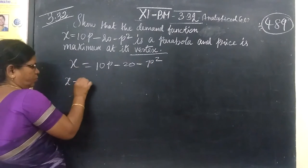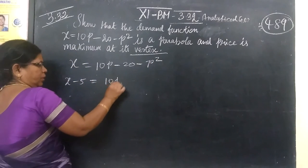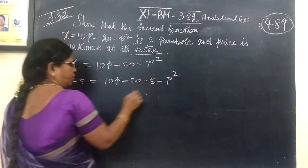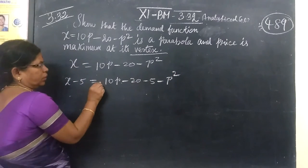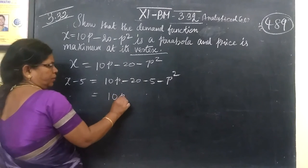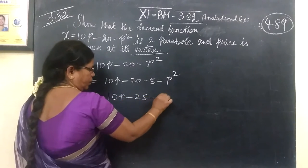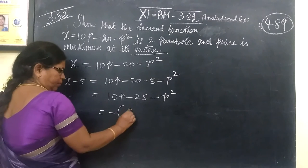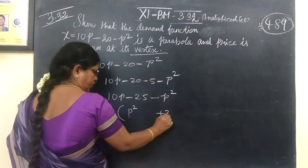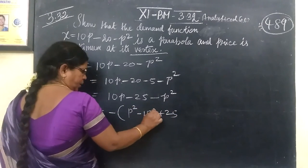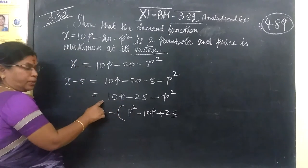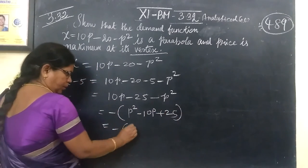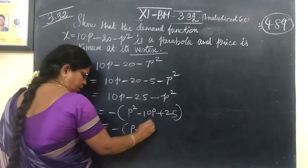Now take minus common. This is equal to 10p minus 20 minus p squared. This equals p minus 5 the whole squared.